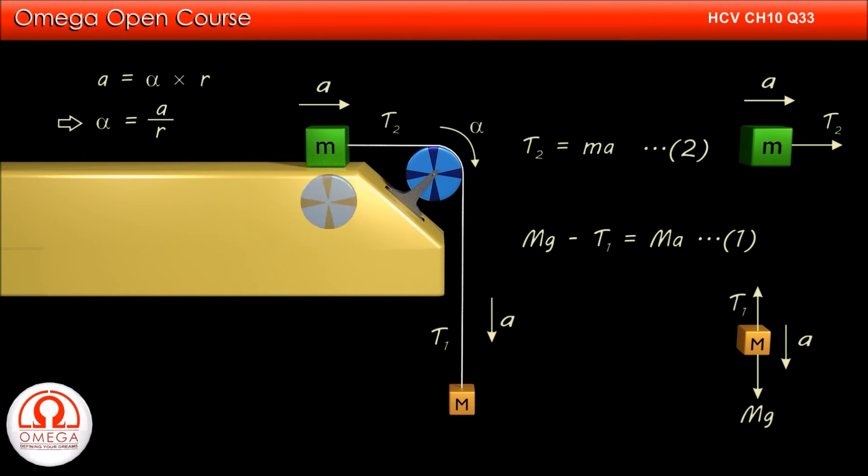In the free body diagram of the pulley, tension T₁ pulls it downwards while T₂ pulls it towards left. Since the radius of the pulley is r, torque about the axis due to T₁ is T₁r in the clockwise direction, while due to T₂ it is T₂r in the anticlockwise direction.